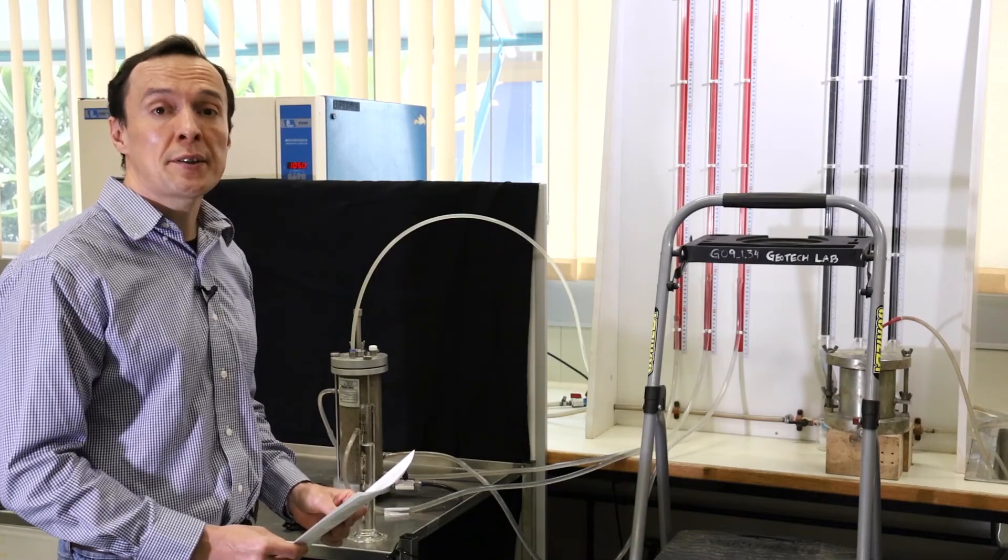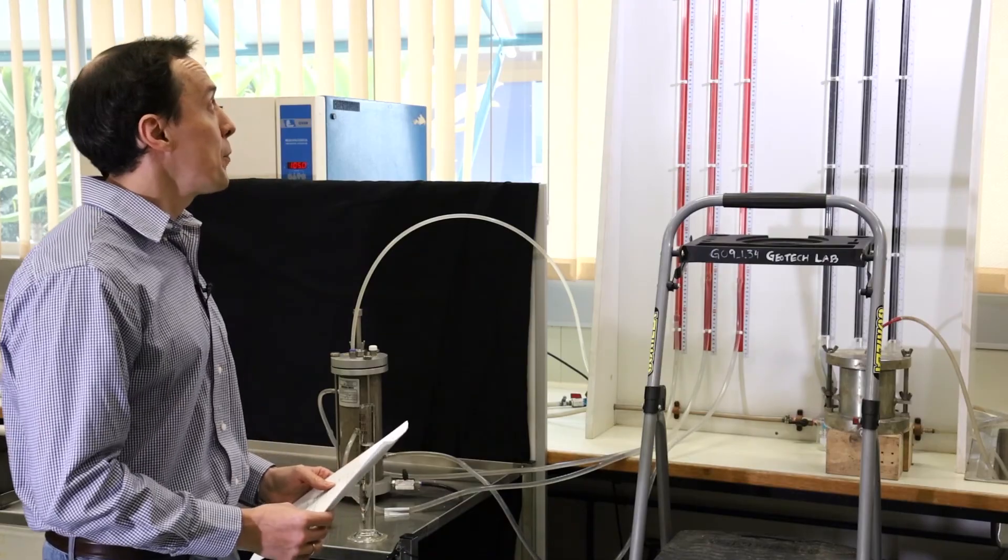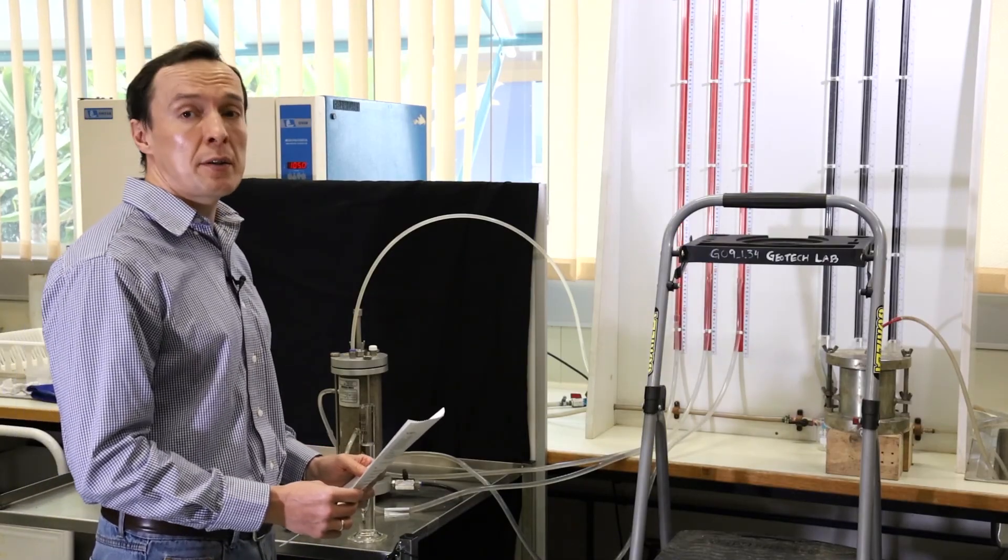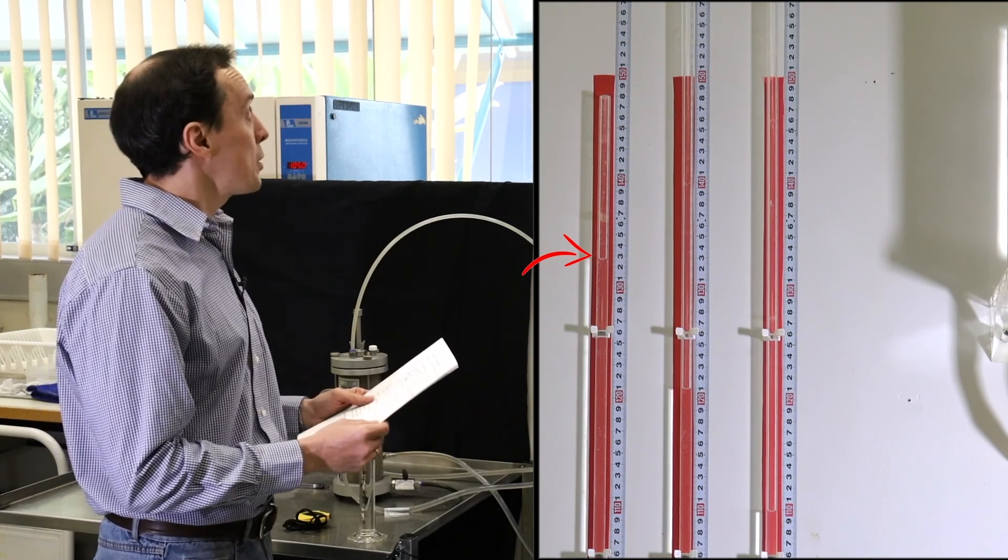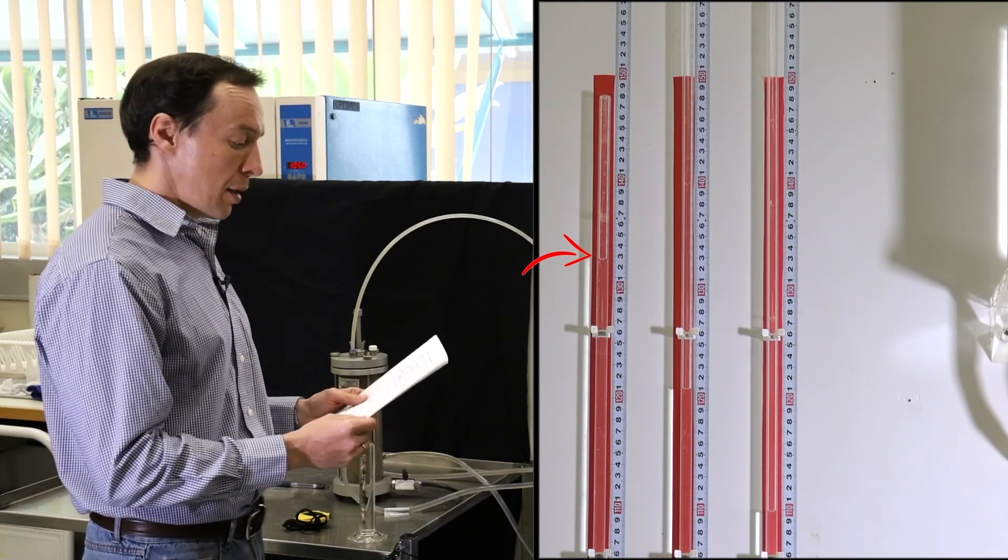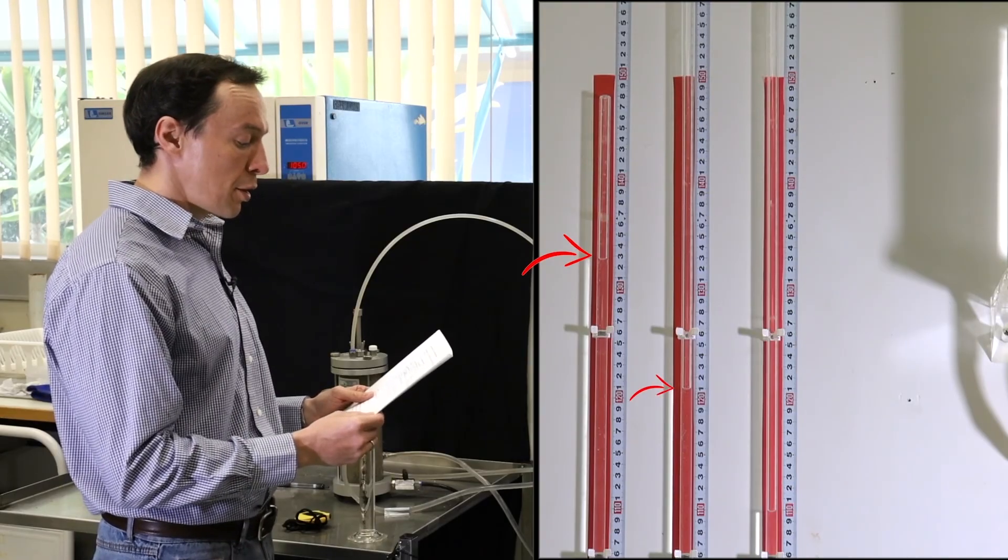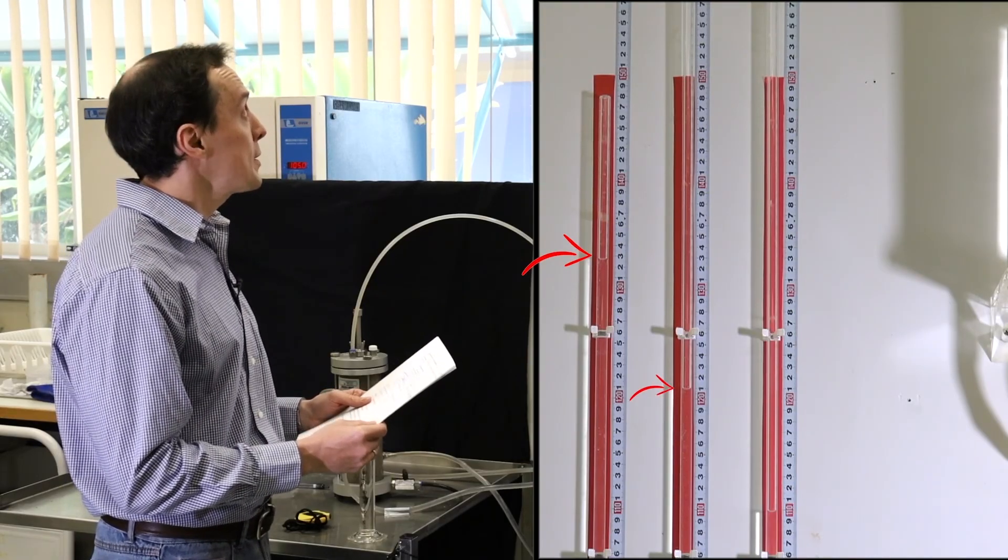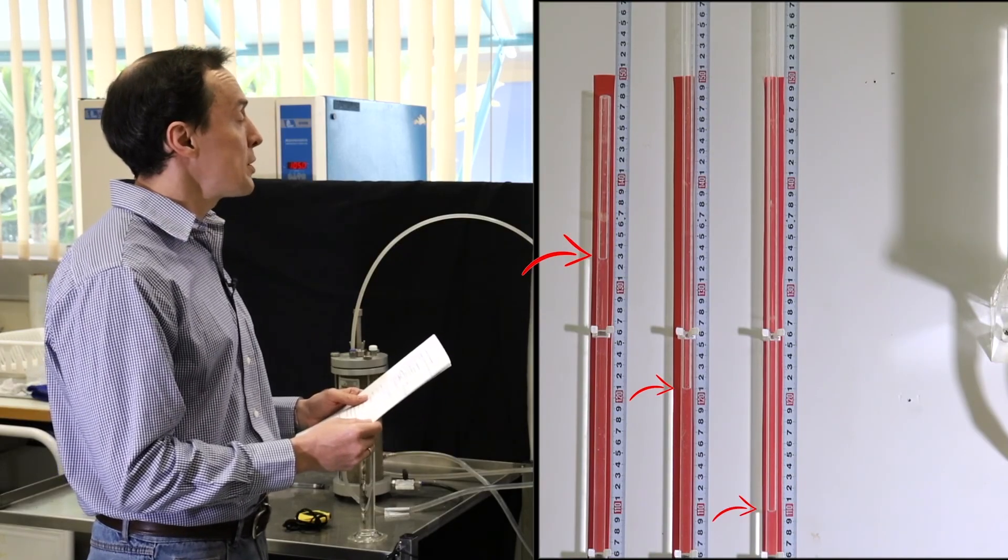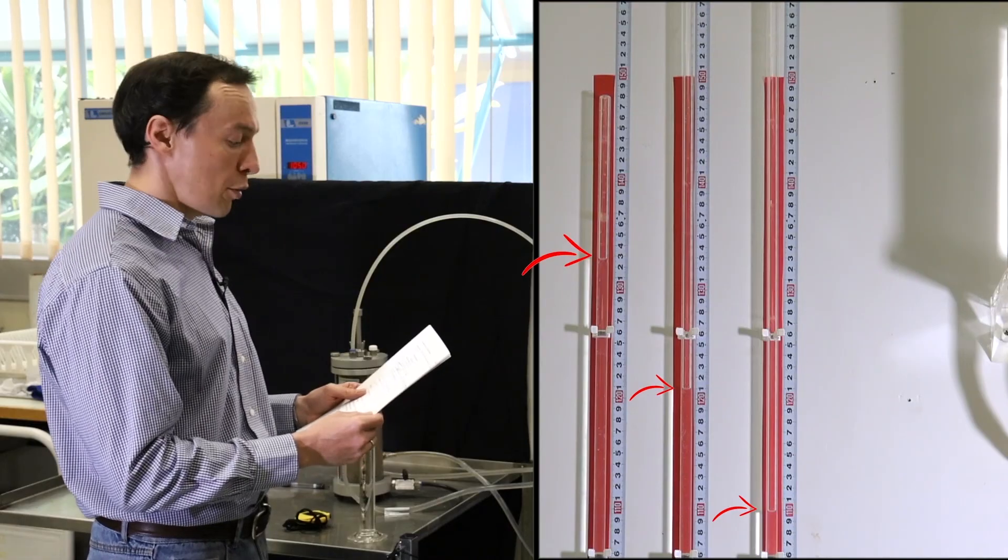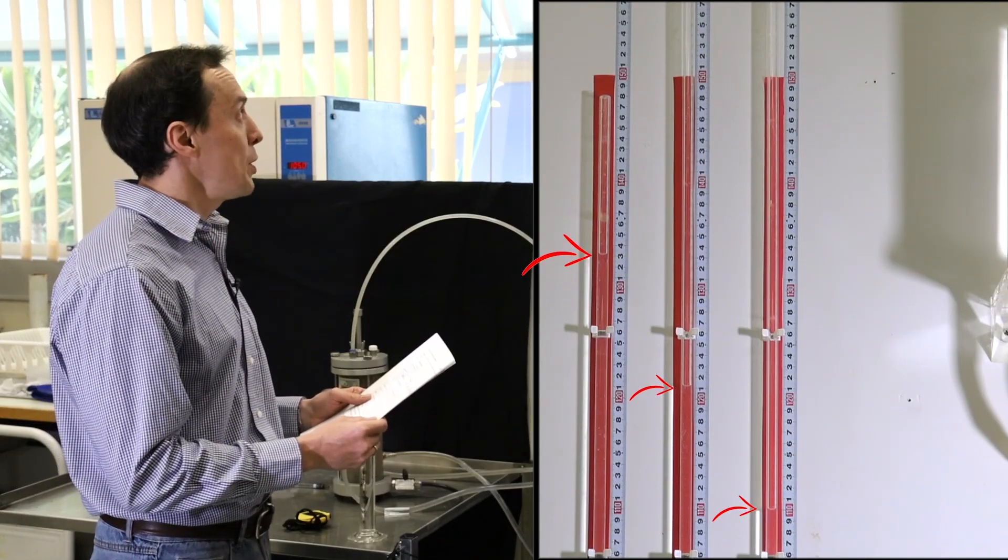To get accurate readings we need to use the level. The reading on the left hand side in the manometer is 1,324 millimeters. The manometer in the middle gives the reading of 1,206 millimeters and the manometer on the right hand side which is connected to the bottom part of the sample gives the reading of 1,096 millimeters.